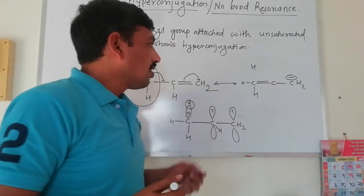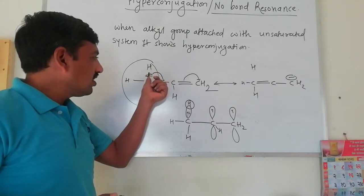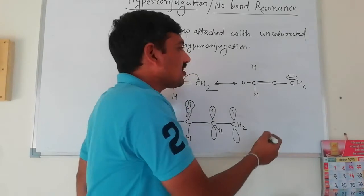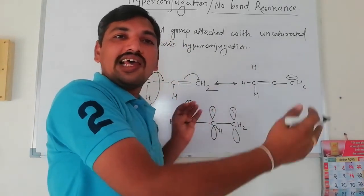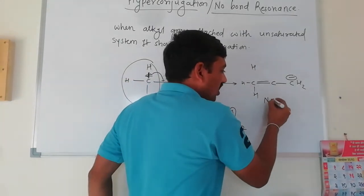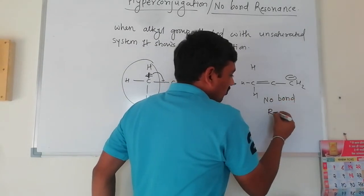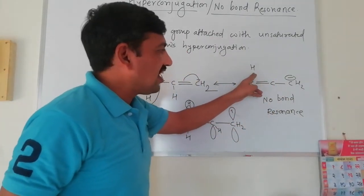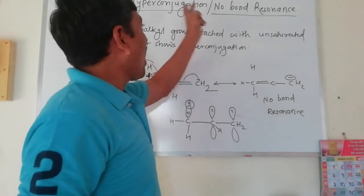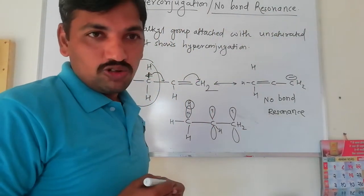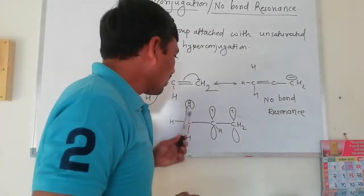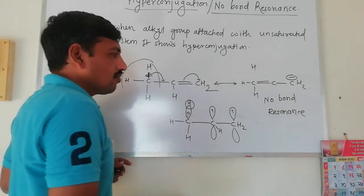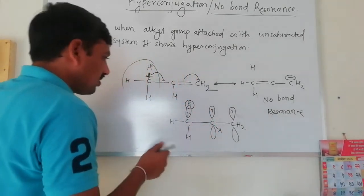Hyperconjugation involves the sigma bond which directly participates in the conjugation. The result is that the hydrogen-carbon bond breaks, so the bondage is not present — that is why the effect is called no bond resonance. In the resonance structure, one bond is not present, so the effect is no bond resonance.